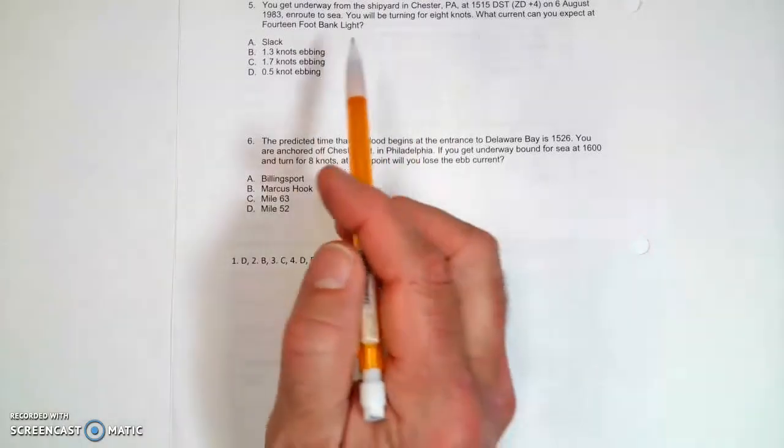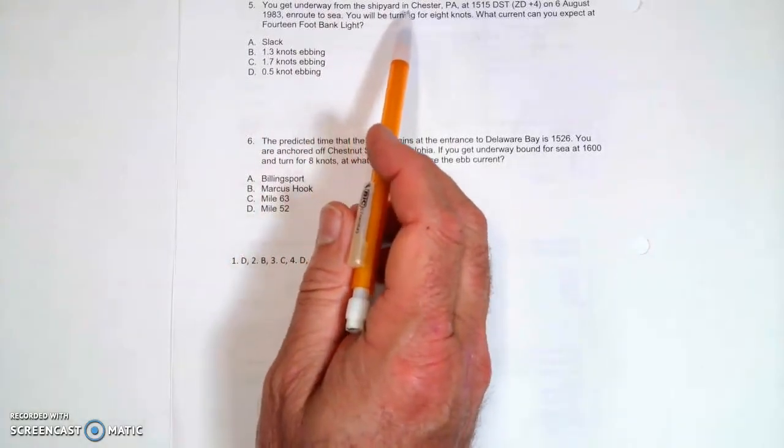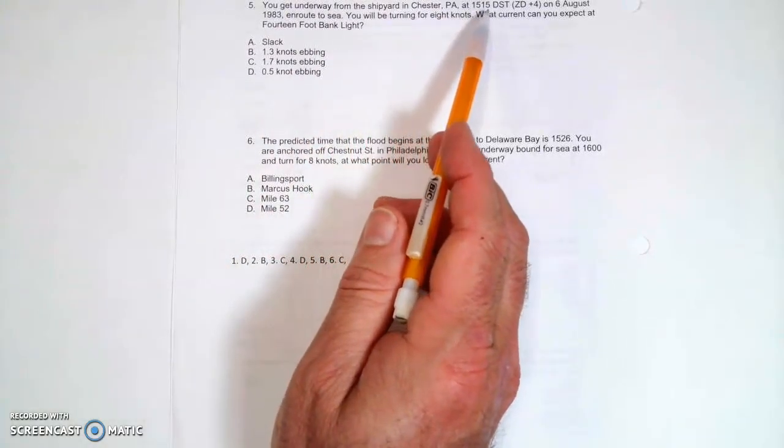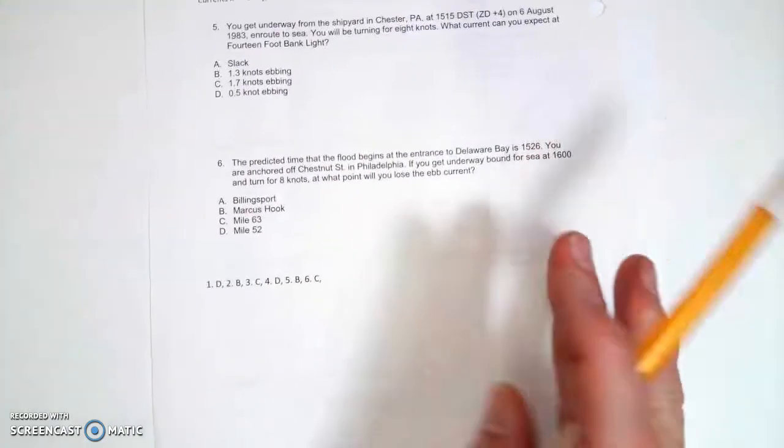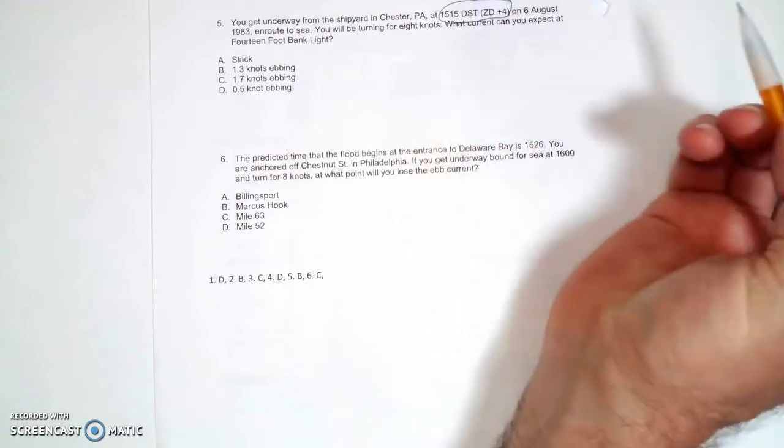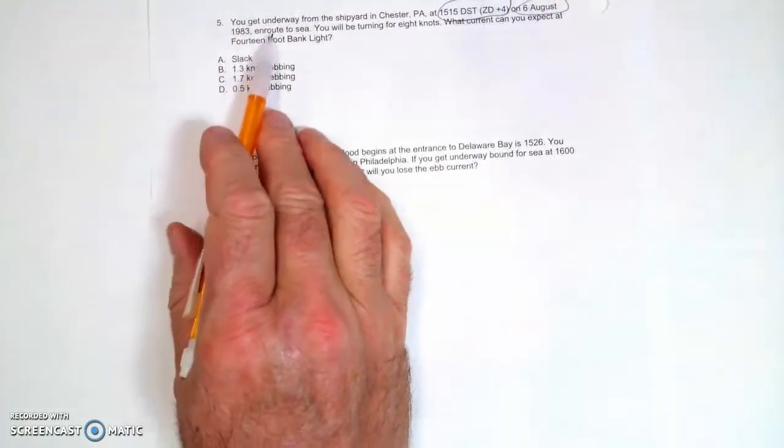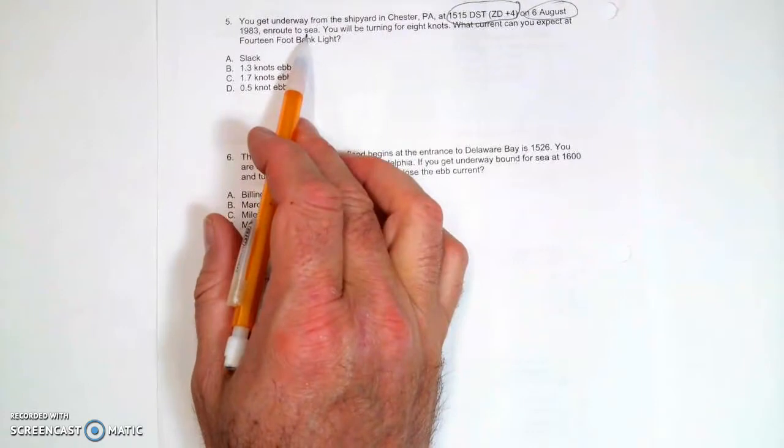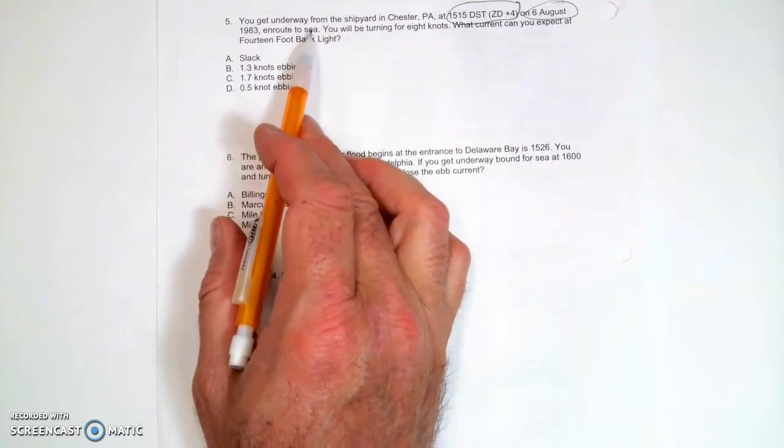So we're going to do this problem. You get underway from Chester PA around 1515 daylight savings time. We're in daylight savings time, so we're going to have to add an hour to whatever we get out of the book. It's 6 August, and we're headed to sea.